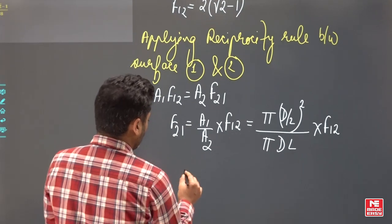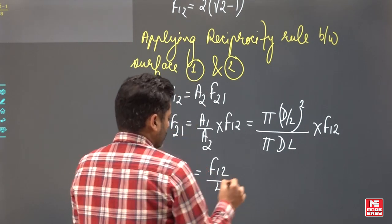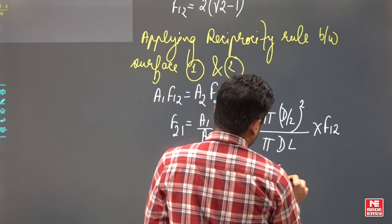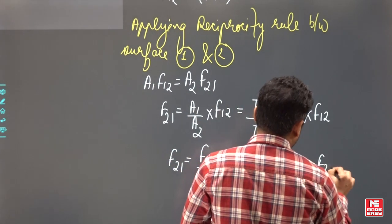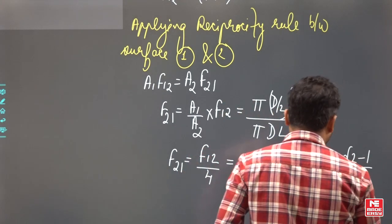L and D are equal, so D squared and DL are cancelled. What is left? F21 equals F12 by 4, that is 2 times root 2 minus 1 by 4, or you can say F21 equals root 2 minus 1 by 4. This is your answer.